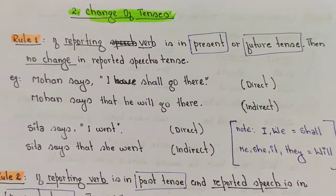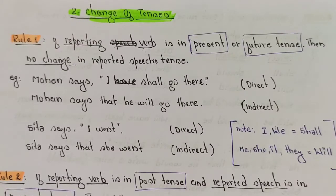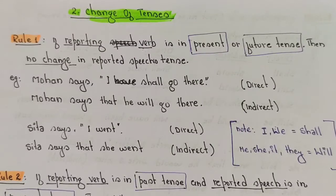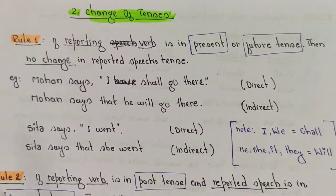Today we will see how change of tenses takes place while converting from direct to indirect speech. In the previous one or two videos we have seen how the change of subject takes place. In today's class we have a total of 16 rules.